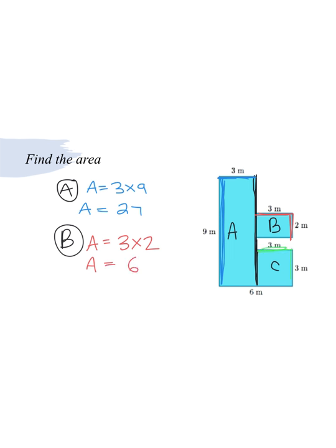And then finally for C, we're going to do 3 times 3. So C is going to be area equals 3 times 3, which would be the area. This is 9.